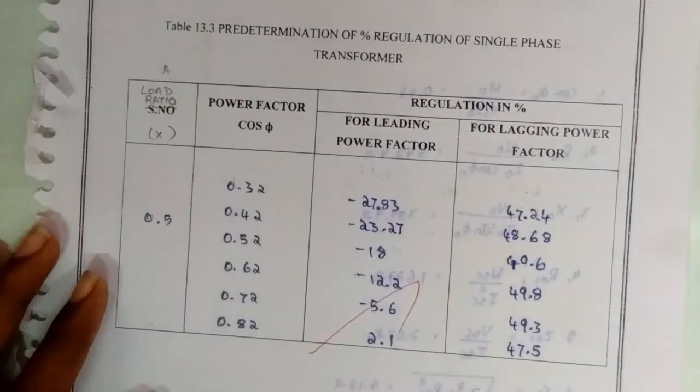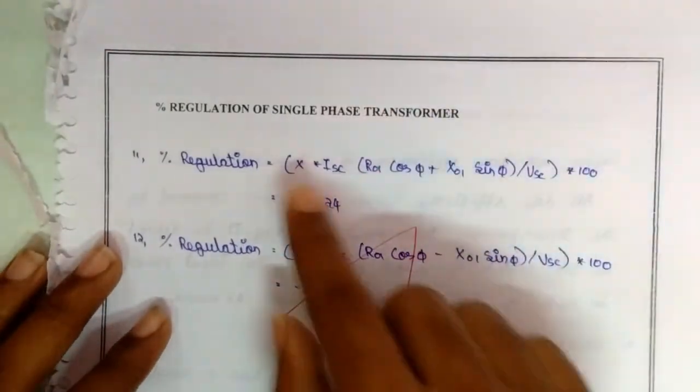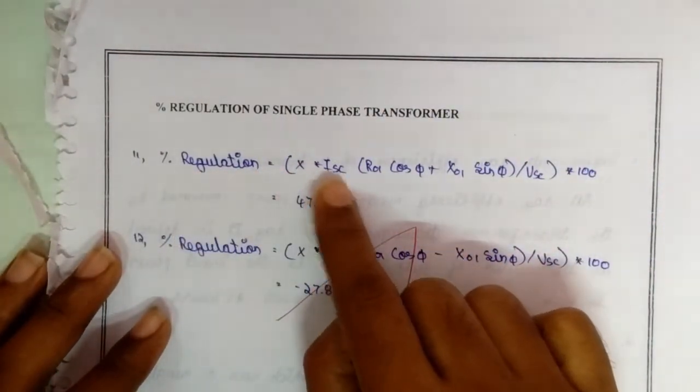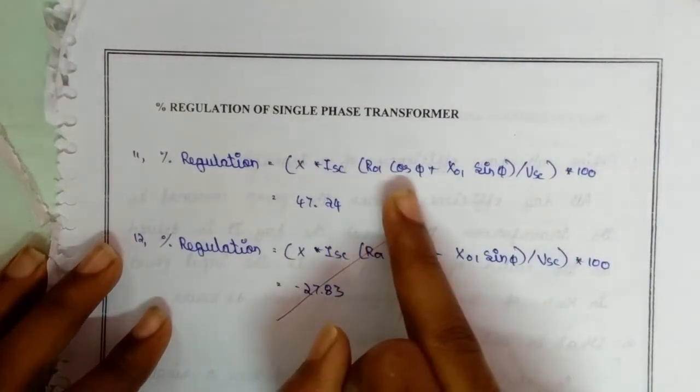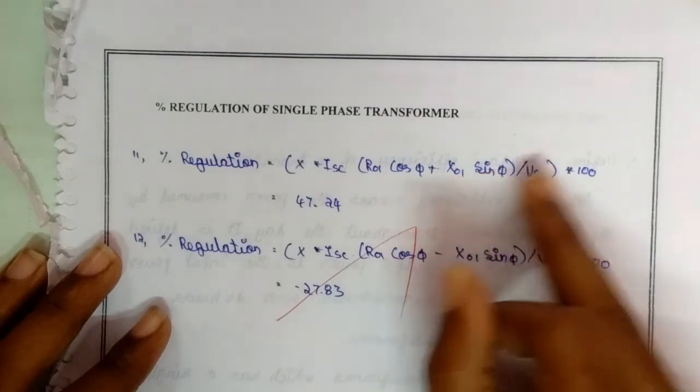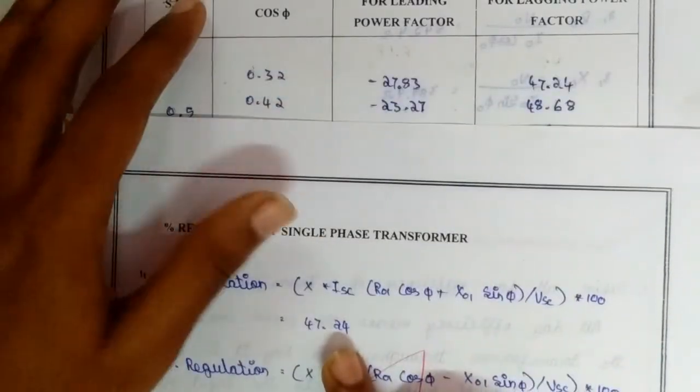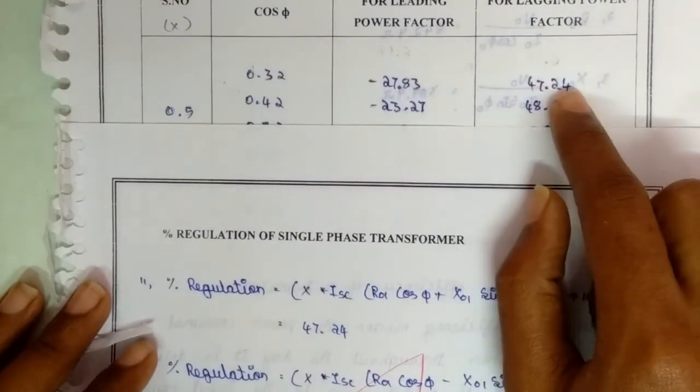For leading power factor, the formula will be X into ISC into R₀₁ cos φ₀ plus X₀₁ sin φ divided by VSE into 100. The value will be 27.83 for a lagging power factor. I have taken down for power factor 0.32.